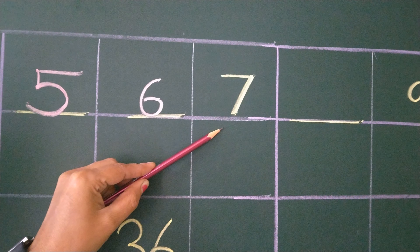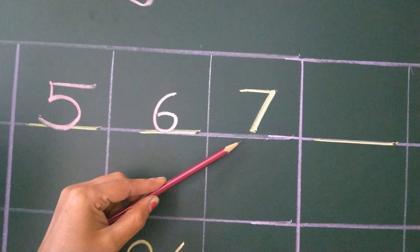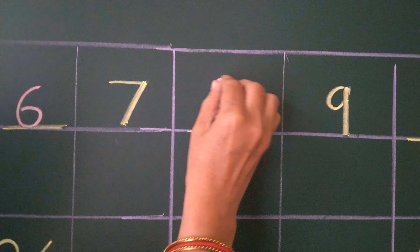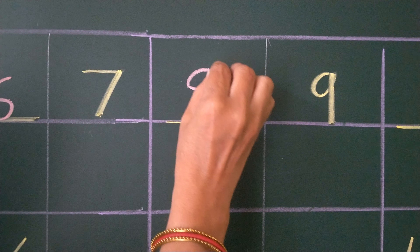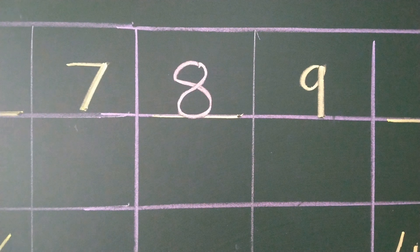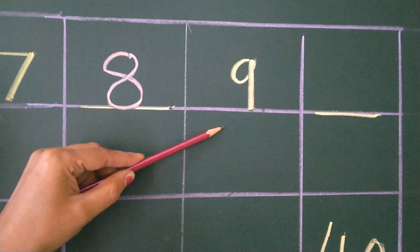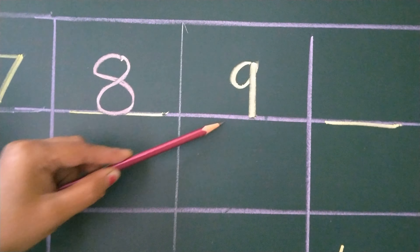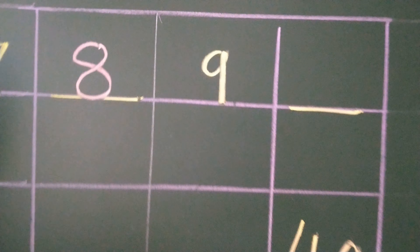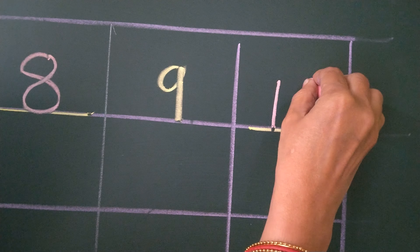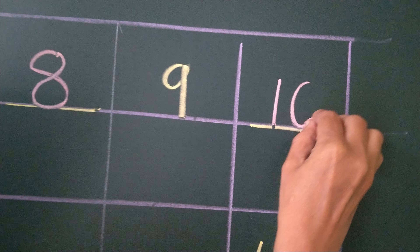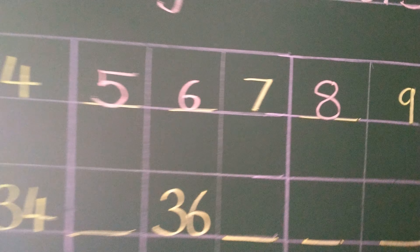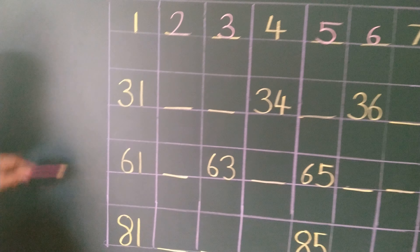Then next number is 7. After 7, which number comes? Number 8. So we have to write here number 8. After 8, 9. Now after 9, which number will come? Number 10. So we have to write here 10.